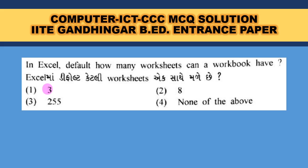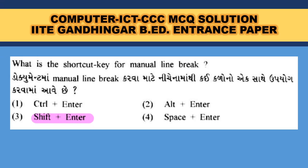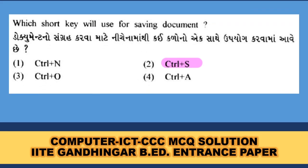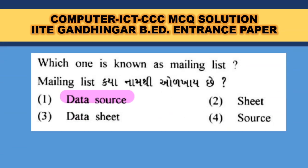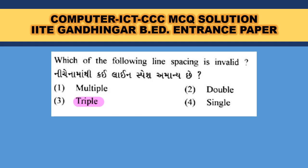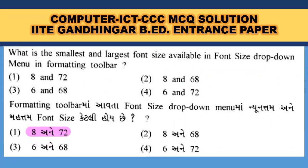In Excel, by default how many worksheets can a workbook have? Three. What is the shortcut key for a manual line break? Shift + Enter. Which shortcut key is used for saving a document? Ctrl + S. Which one is known as a mailing list? That is data source — from where we get the contacts and address. Which of the following line spacing is invalid? Triple is not a valid line spacing, so triple is the correct answer.